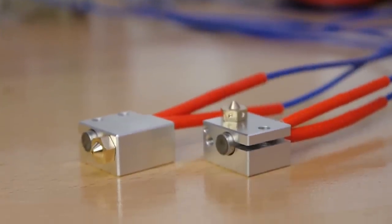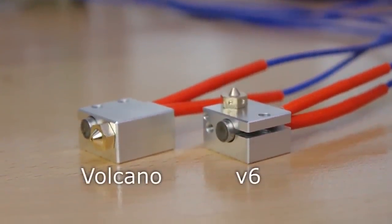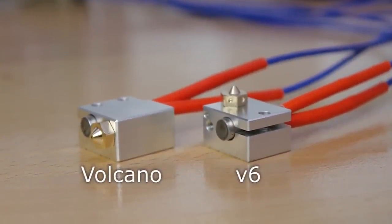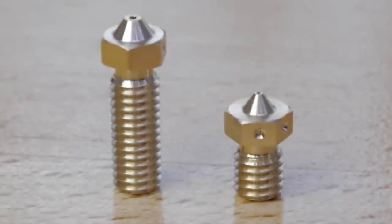And here's where the E3D Volcano comes in. It's big, it's fast, it's long, and its nozzle has a gaping hole the size of a nostril. Well, not quite, but it's pretty large. So it's really meant for printing plus-sized models on plus-sized printers.